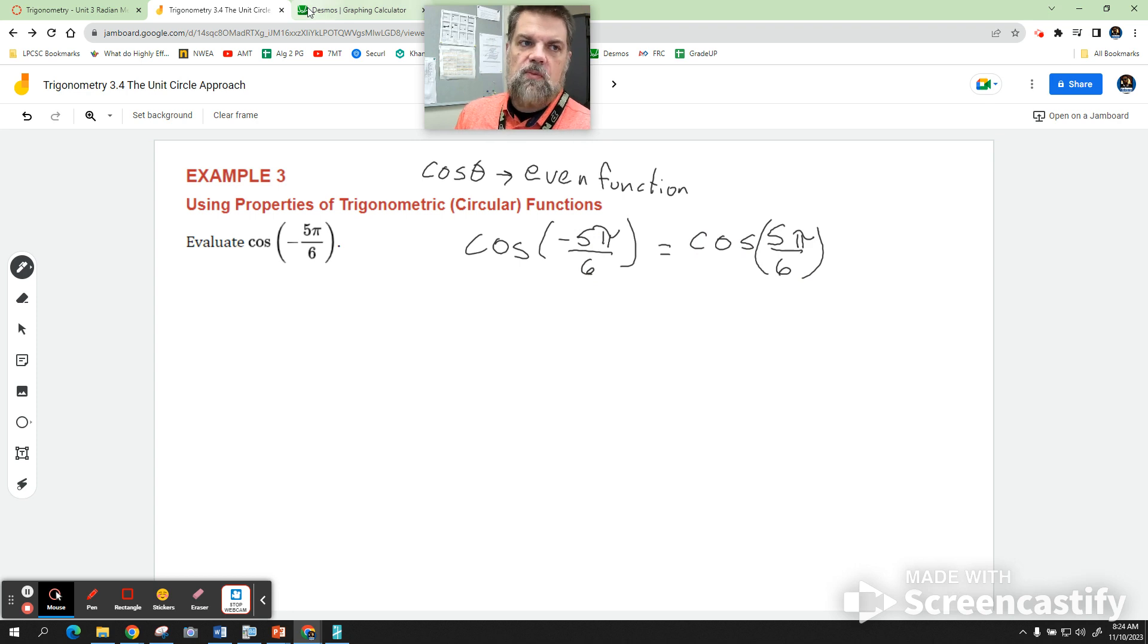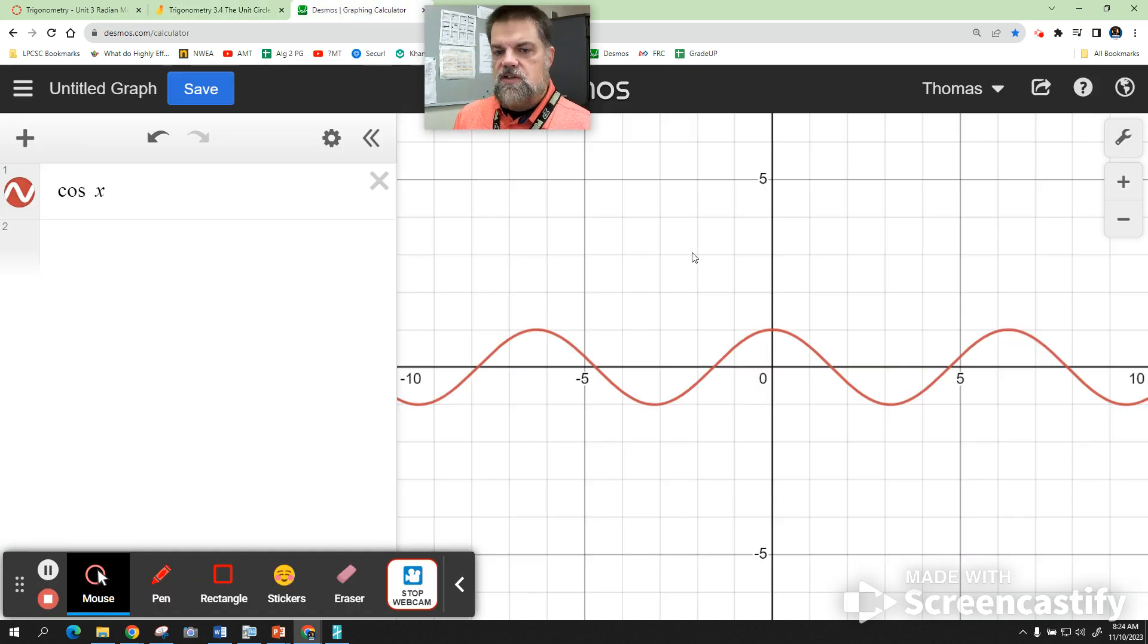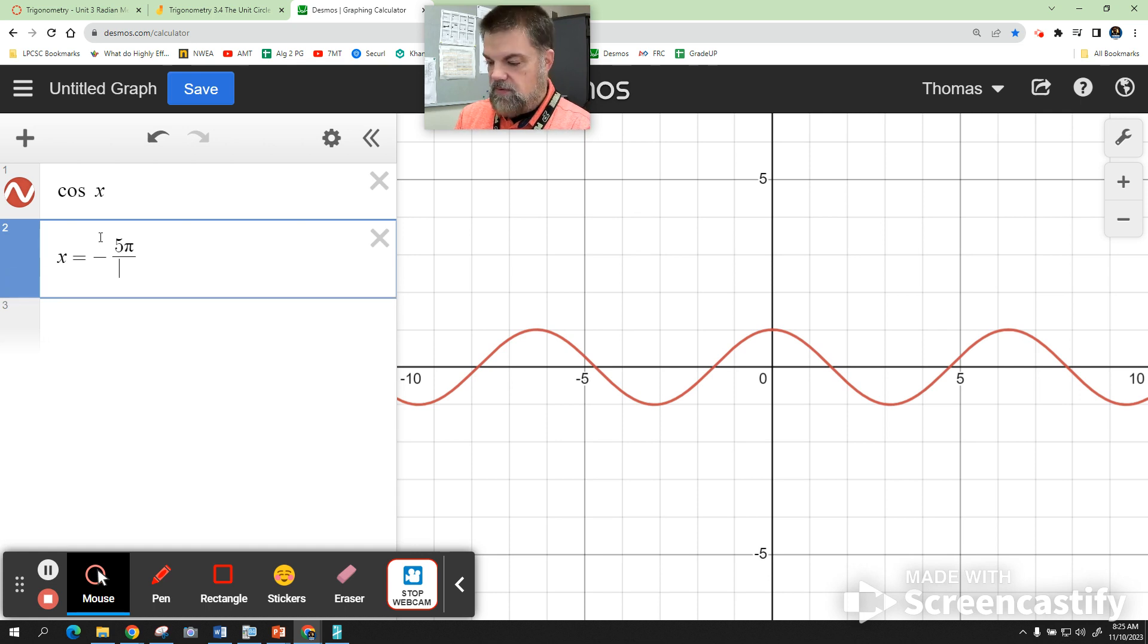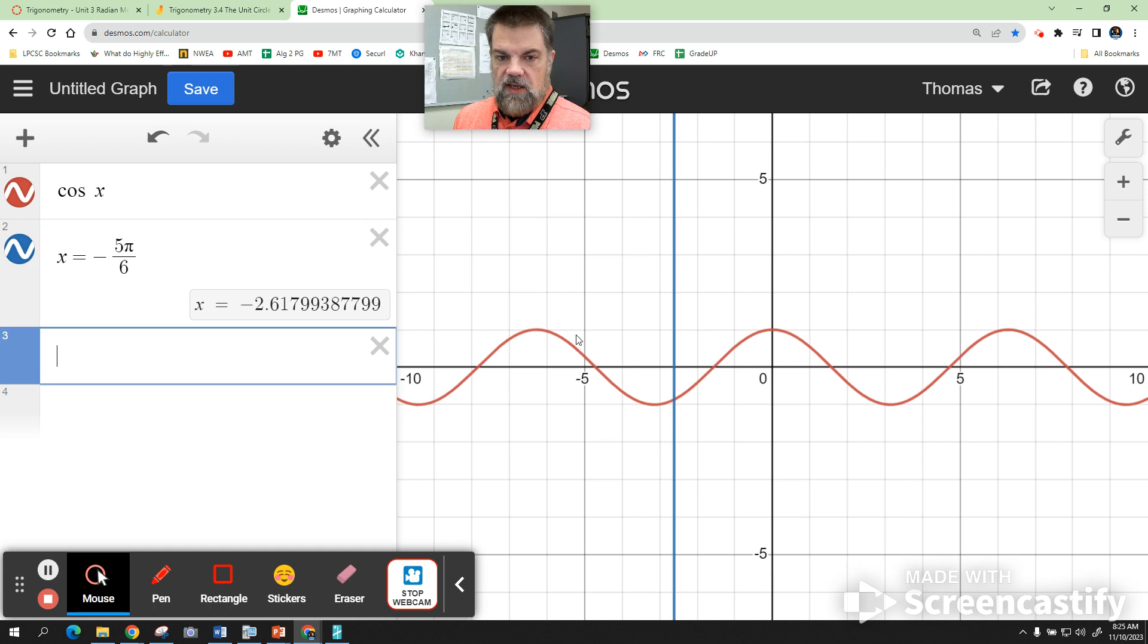Now what I want to do is show you why that is on the graph. So what I need to do is define the point of negative 5 pi over 6. I'm going to say x equals negative 5 pi divided by 6. And so right here at this intersection, that's negative root 3 over 2, okay?